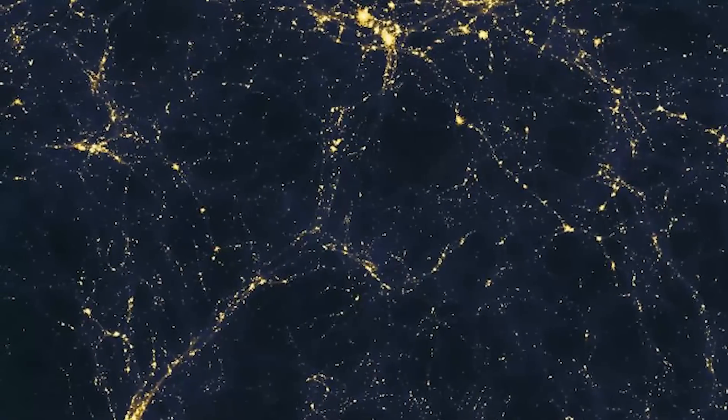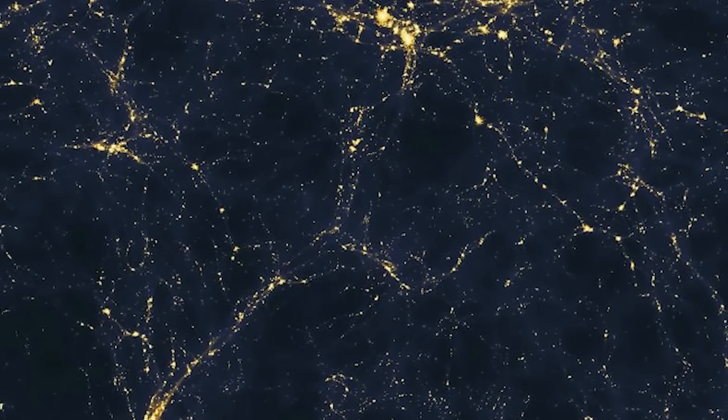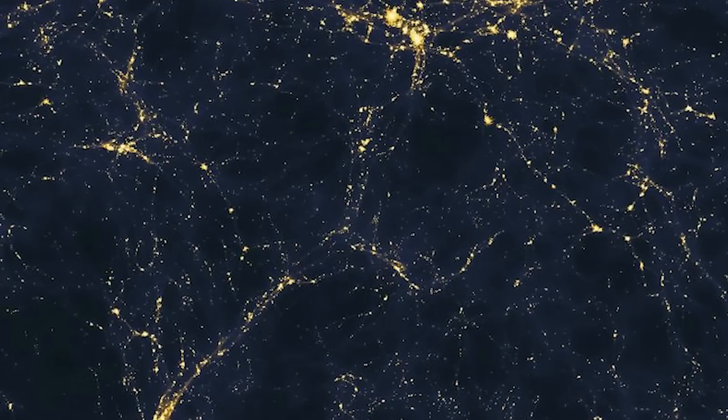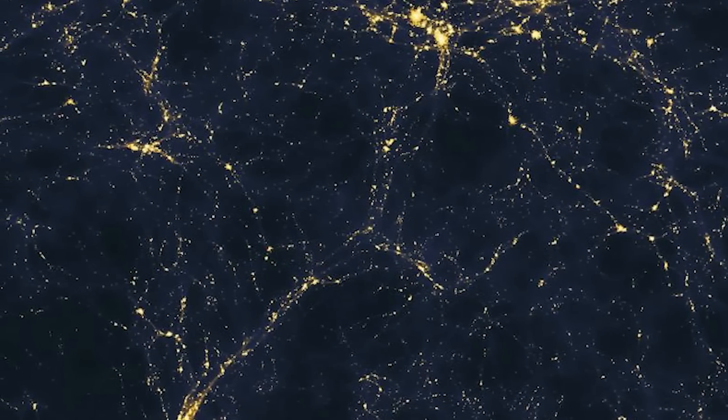Here is a computer simulation of the universe, showing how galaxies tend to concentrate in the clusters or filaments. The black areas are voids that are growing larger as galaxies concentrate in the clusters or filaments.